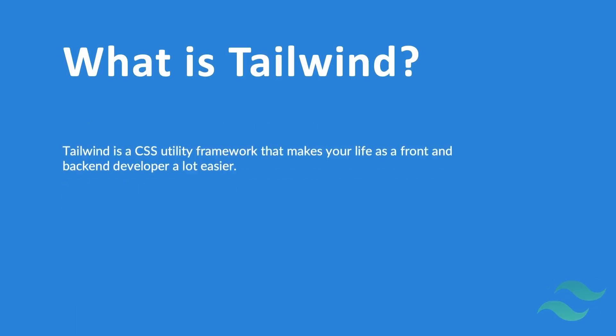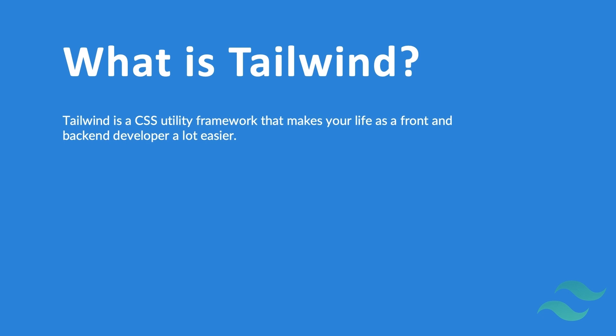So what is Tailwind? Tailwind is a CSS utility framework that makes your life as a front and back-end developer a lot easier. I'm saying back-end developer as well since you don't need to write your own CSS anymore. You can see Tailwind as a predefined CSS file where you find loads of CSS classes that you can use to style your elements by just adding classes inside your HTML tags.